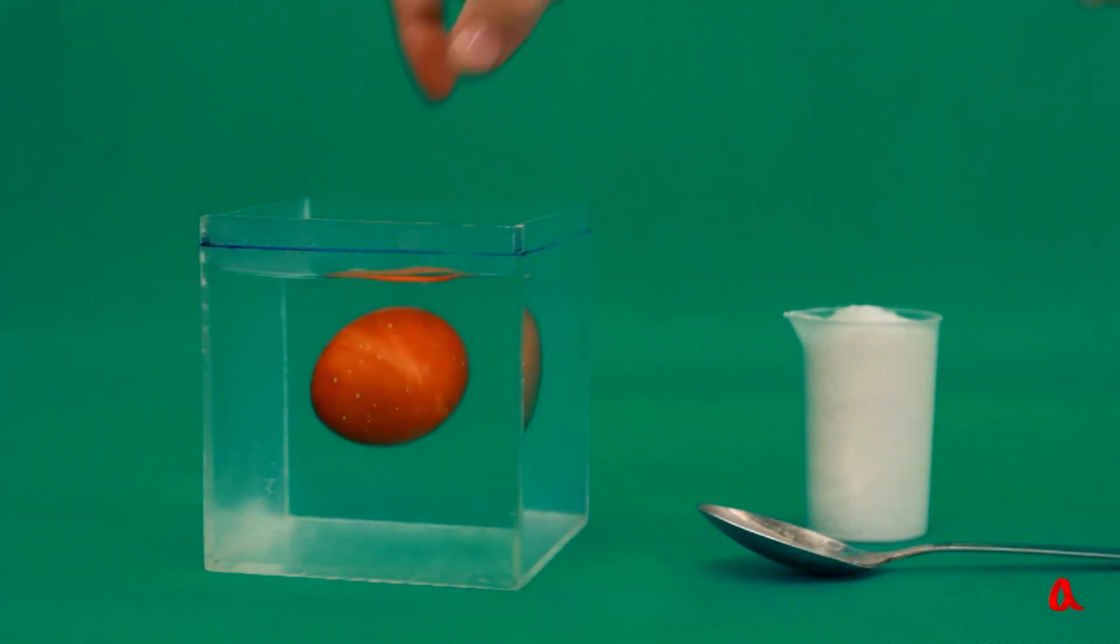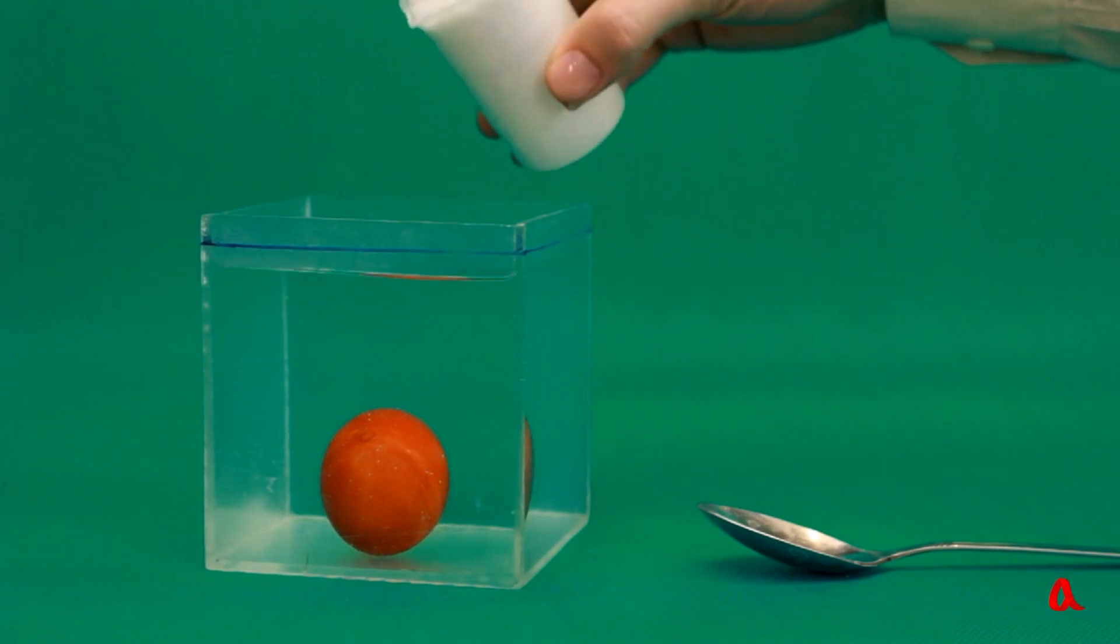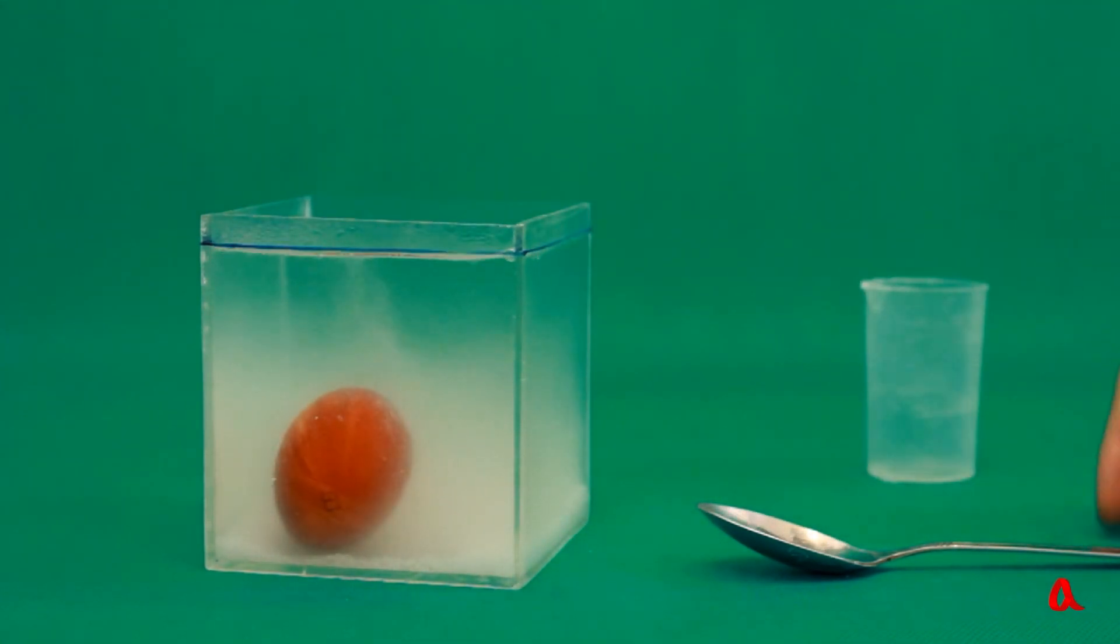Let's put an egg into the water. You can see it sink. Now we'll pour some table salt into the vessel and stir it. The salt dissolves in water.